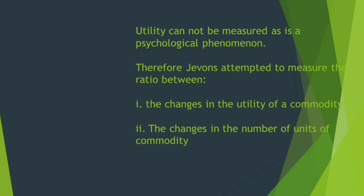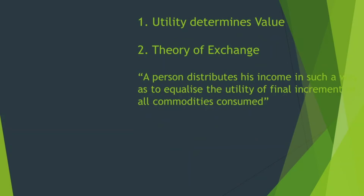Utility is a subjective phenomenon or psychological phenomenon. Therefore, utility cannot be measured in exact terms. Jevons attempted to measure the utility in the form of a ratio between the changes in the utility of a commodity and the changes in the number of units of the commodity. In his view, the values of commodities were judged in regard to future utility. Labour was never the cause of value; in a majority of cases, labour became a determining circumstance of value.